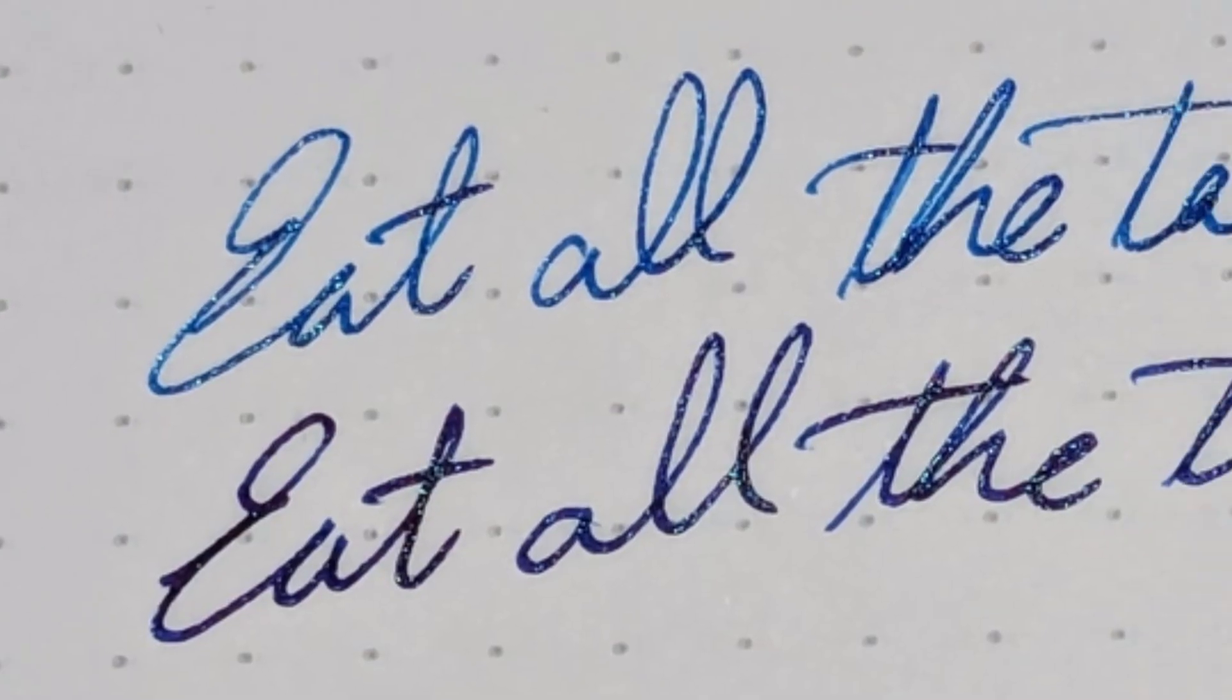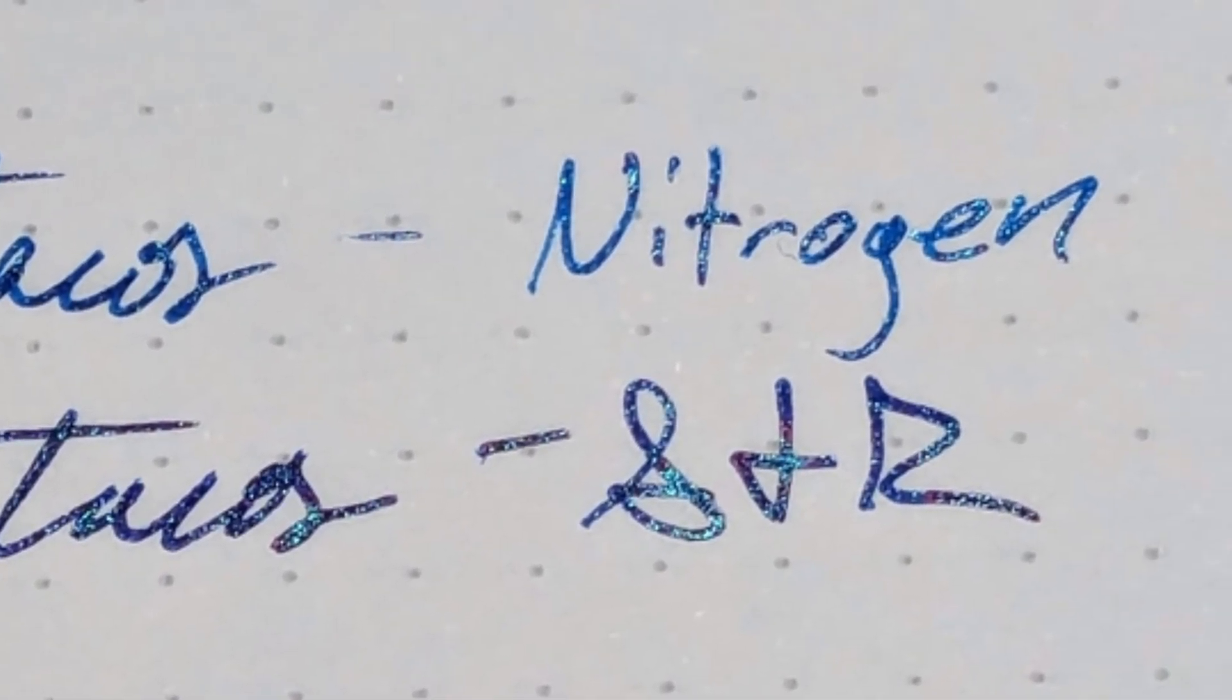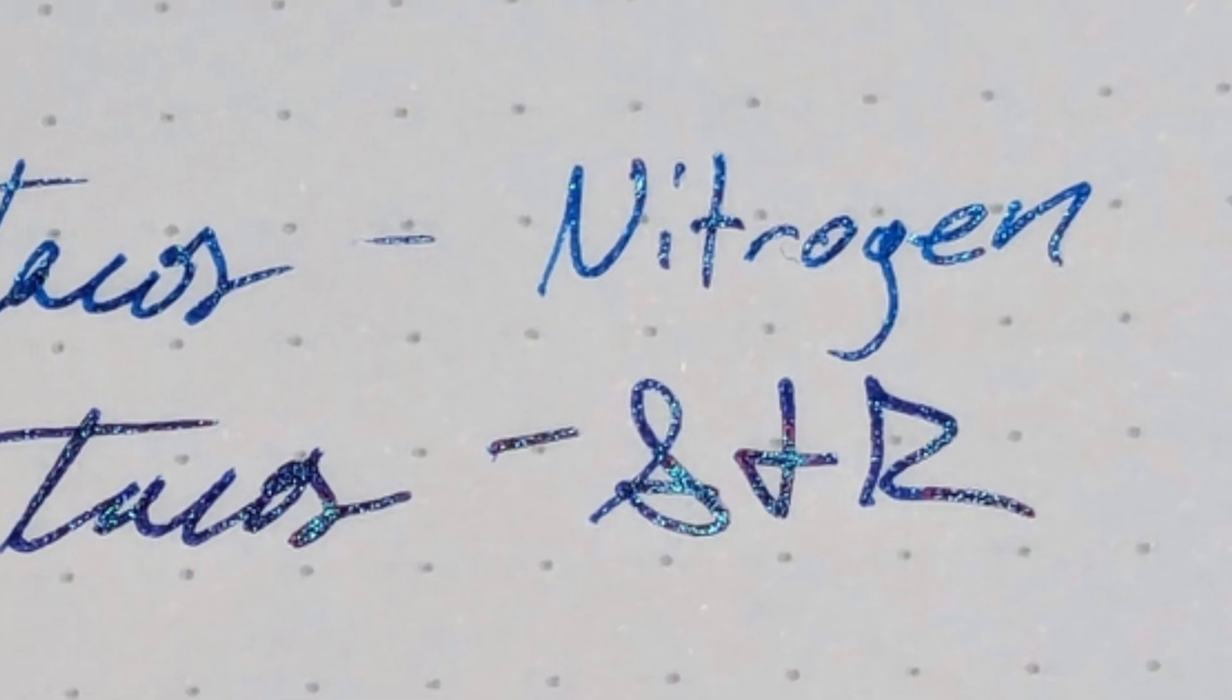The Rhodia Dot Pad is around the same, essentially nothing on the nitrogen and just faint hints on the Skull and Roses.